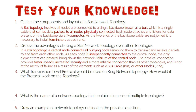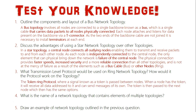Question three: what transmission level protocol would be used on a ring network topology, and how would it be used? It's the token ring protocol, in which the token is passed from node to node around the network. When a node has the token, it receives all data addressed to it and can send its own messages, then passes the token to the next node, which does the same — hence the name token ring protocol.